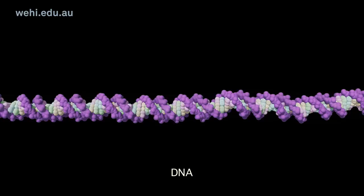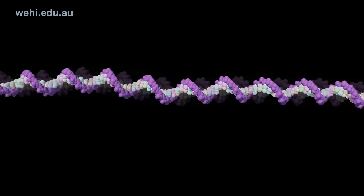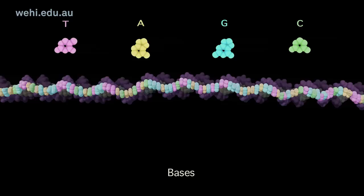DNA Review. Our genetic information is encoded by the DNA double helix. When DNA is read or transcribed, one strand of the double helix serves as a template strand. The specific order of the four bases encodes genetic information and serves as the blueprint for our genetic makeup.